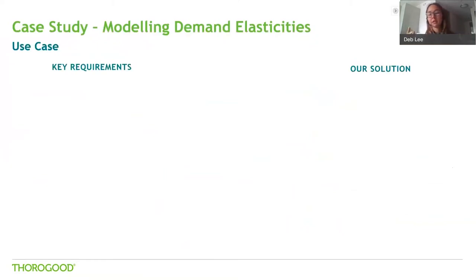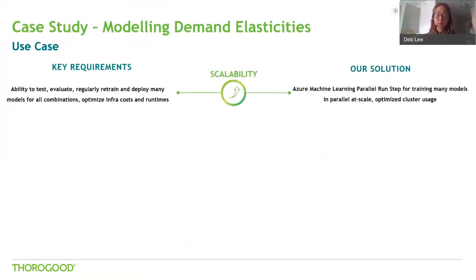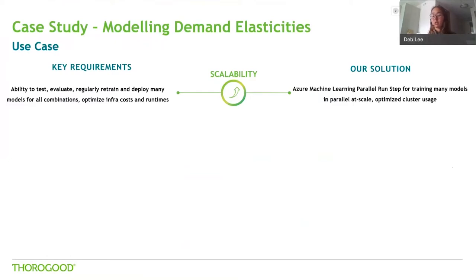Now I'm going to talk about what we did for the demand elasticities. Our customer had some well-defined key requirements we needed to hit to be successful. The first was the ability to scale — we're not just trying to build something that works for one brand or one product. We need a model that can scale, be regularly retrained, deploy many models potentially, and keep infrastructure costs optimized. We are using Azure Machine Learning's parallel run step functionality for our model training, which allows us to effectively batch process many different models across the nodes on a cluster and keeps infrastructure costs low and optimized.